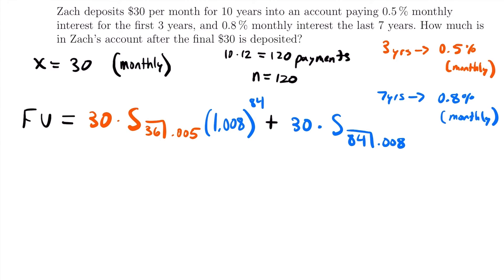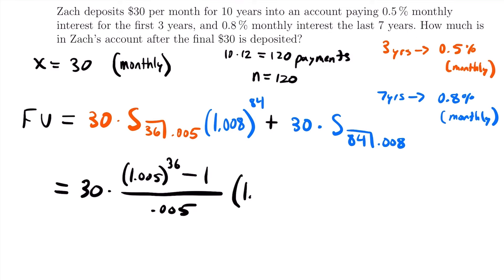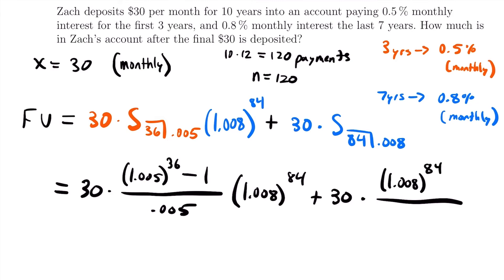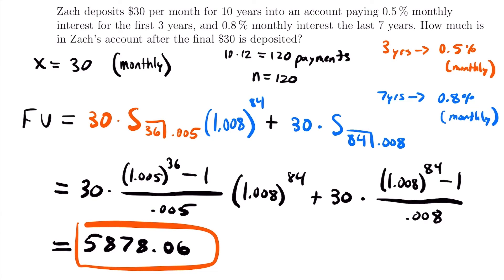Now we have our equation set up and can plug it into the calculator. This equals 30 times (1.005^36 minus 1) divided by 0.005, multiplied by 1.008^84, plus 30 times (1.008^84 minus 1) divided by 0.008. Plugging all of this into the calculator, the future value equals $5,878.06. That is the future value of those $30 monthly payments for 10 years given those two different interest rates.